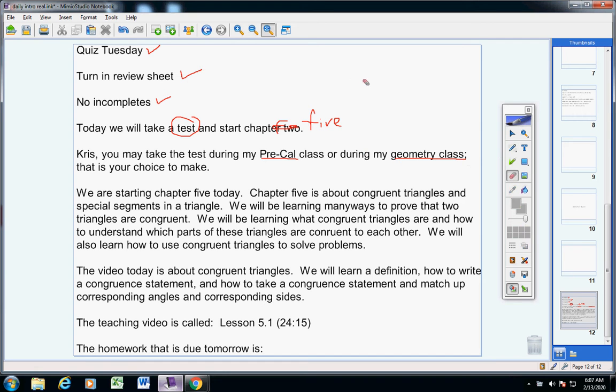Now, we're starting chapter 5 today. Chapter 5 is about congruent triangles and special segments in a triangle. We will be learning many ways to prove that two triangles are congruent. We will be learning what congruent triangles are and how to understand which parts of these triangles are congruent to each other. We will also learn how to use congruent triangles to solve problems.